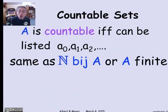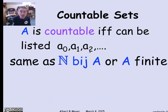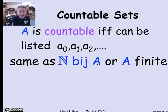That's assuming all of the a's are distinct for it to be a bijection. As a special case, finite sets are also considered to be countable. If N is in bijection with A, then A is called countably infinite. The other possibility is that A is finite, and the two together are just saying A is countable.